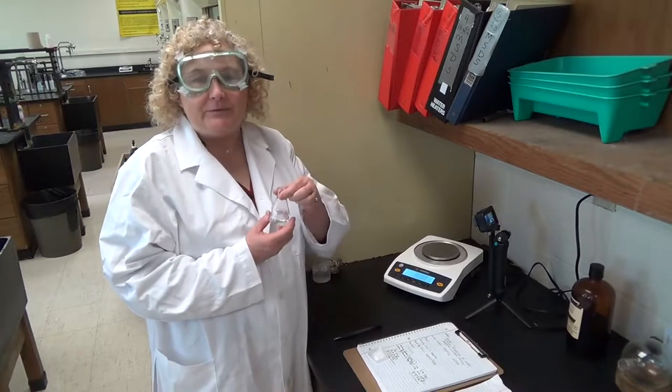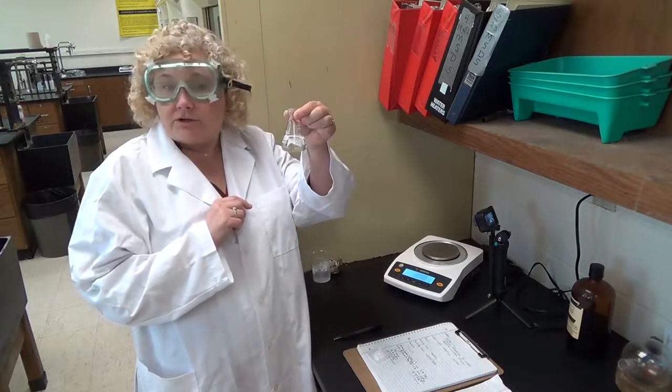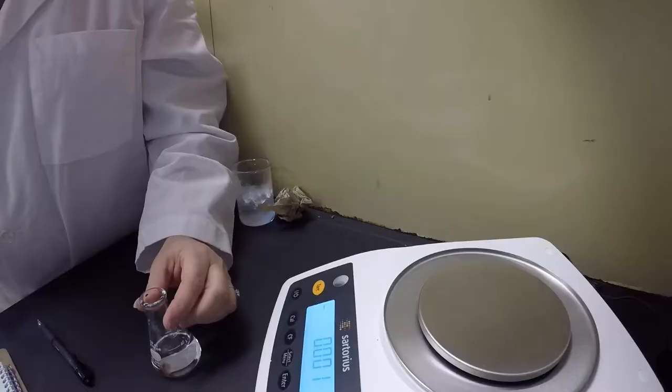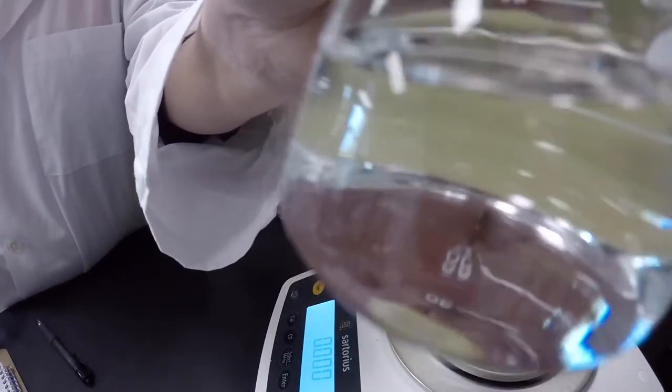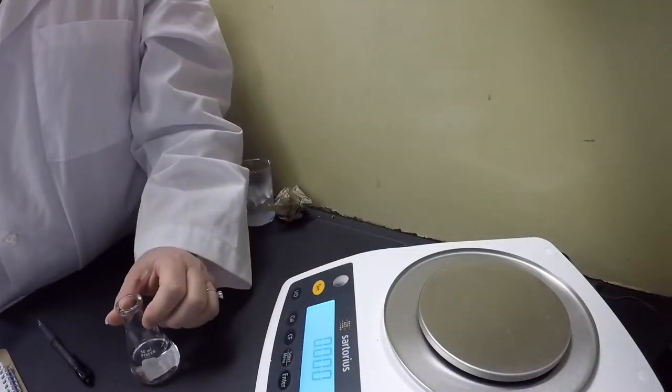Okay, so once again we are examining the properties, examining what happens when we change matter. Here in this Erlenmeyer flask, we have a certain volume of water. You can see that up close, that it's just water. It's a clear liquid.